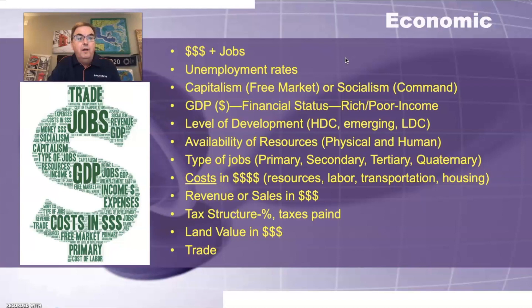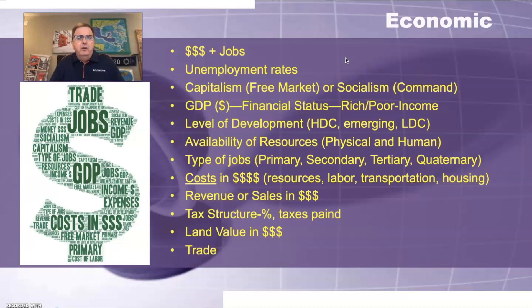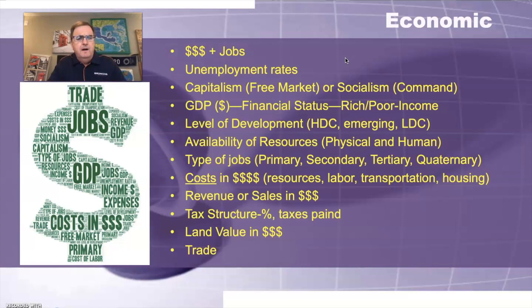When talking about level of development, there's economic level development and social level development, so be very clear. You can talk about emerging economies, highly developed countries, or less developed countries, but frame it in terms of income and GDP per capita. Availability of resources — physical or human capabilities — human labor is a good one. Types of jobs: primary, secondary, tertiary, quaternary, and the structure of the economy. That's a very good thing to discuss when talking about economics.